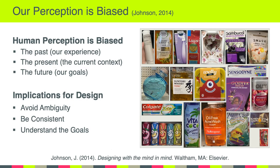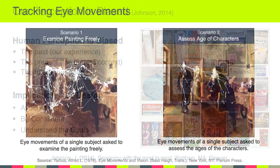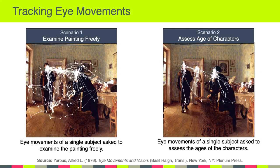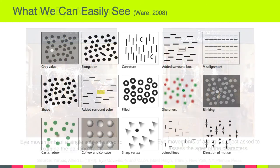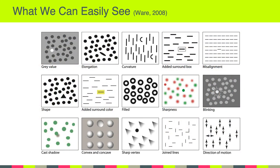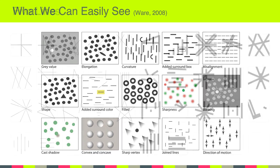From there, we learned about how human perception is biased and can be influenced by the past, the present context, and our future goals. We learned that what we see is the result of bottom-up and top-down processing. And fortunately, as designers, we can leverage empirical research that's revealed specific feature-level contrasts that can make something visual easy to find.